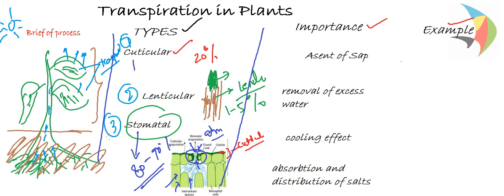Now why is transpiration important for a plant? First is the ascent of sap — the upward or capillary movement of water from the lower portion through the xylem to the upper part. This movement is called ascent of sap, and this pull is created by the transpiration process. It is important for the movement of water from the lower portion to the upper portion. The second importance is that transpiration helps in the removal of excess water from the plant.